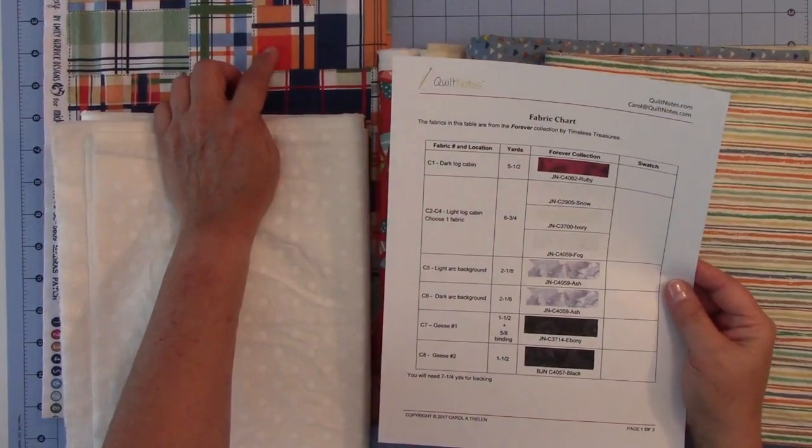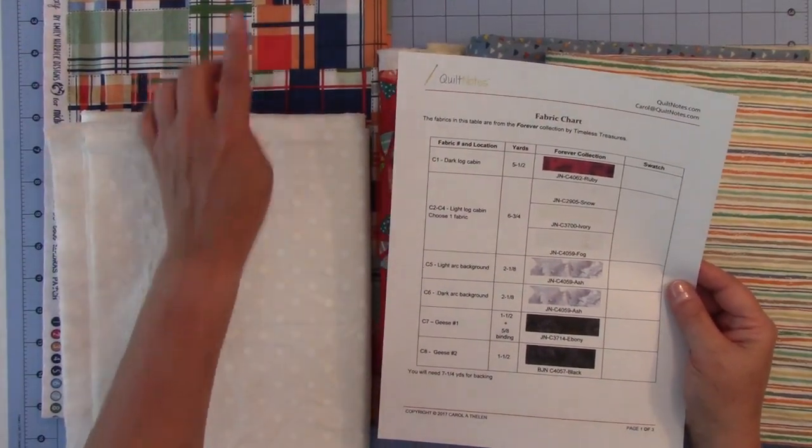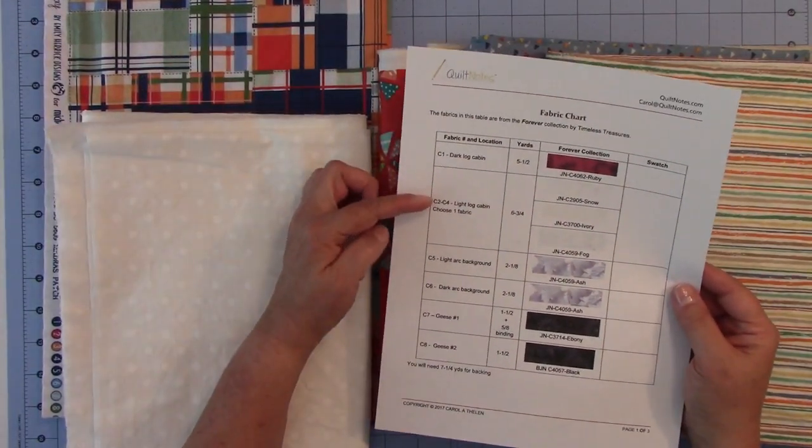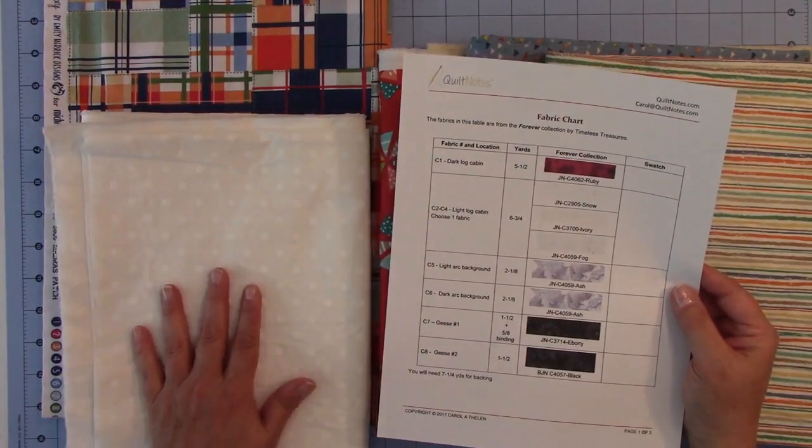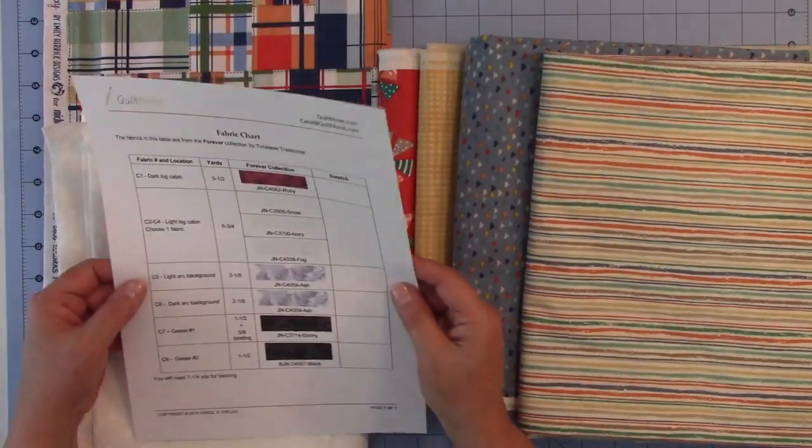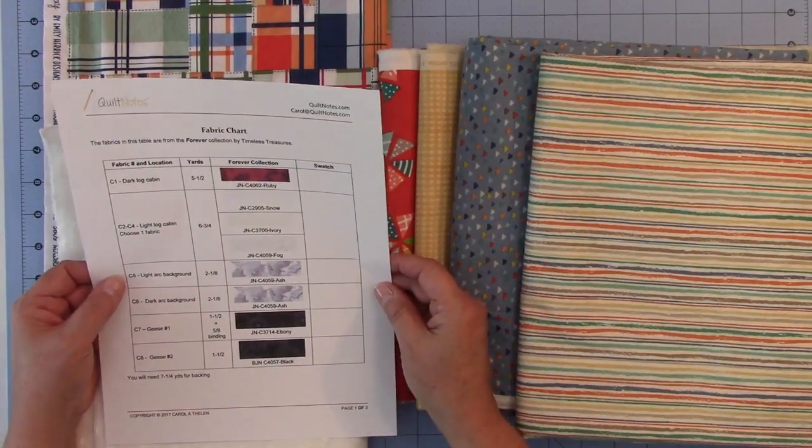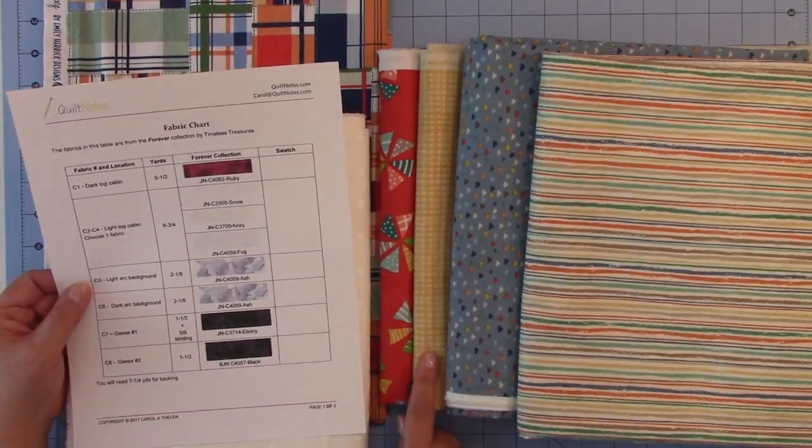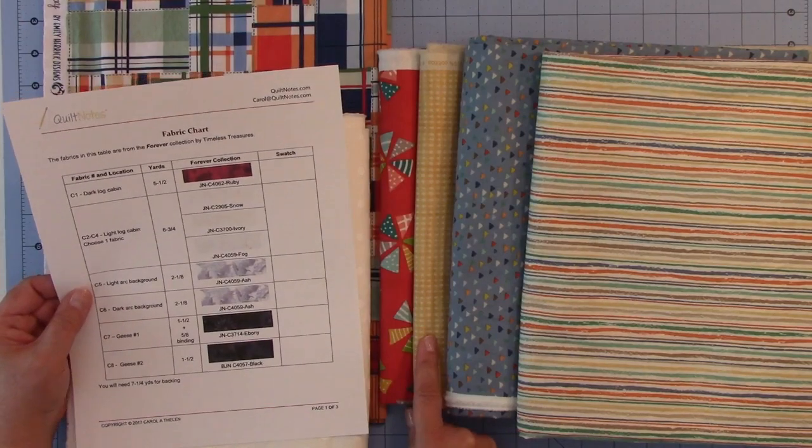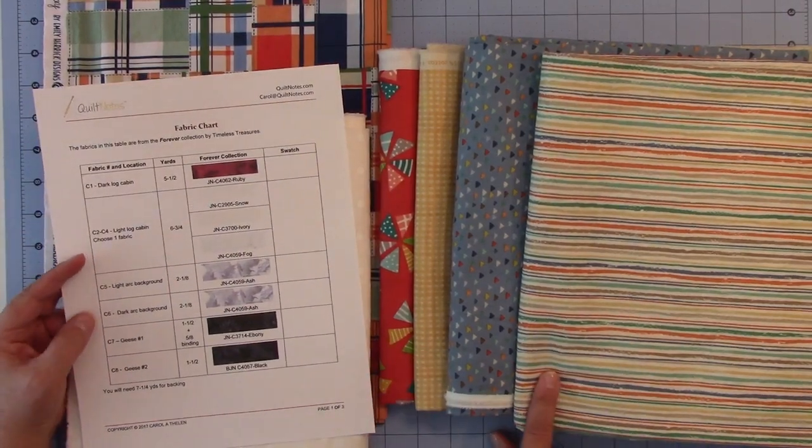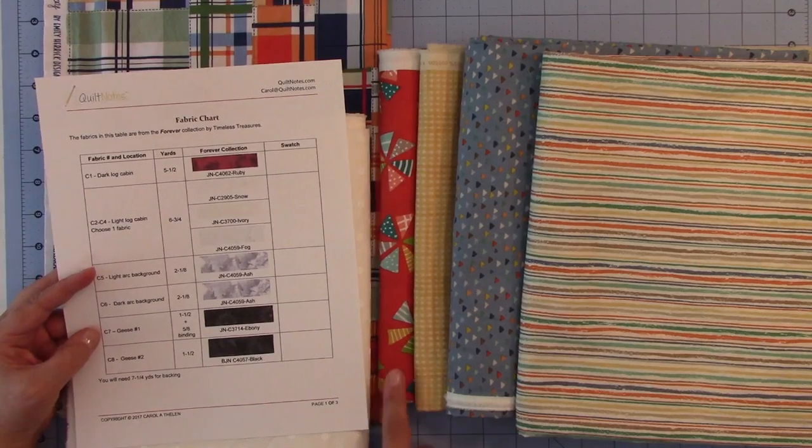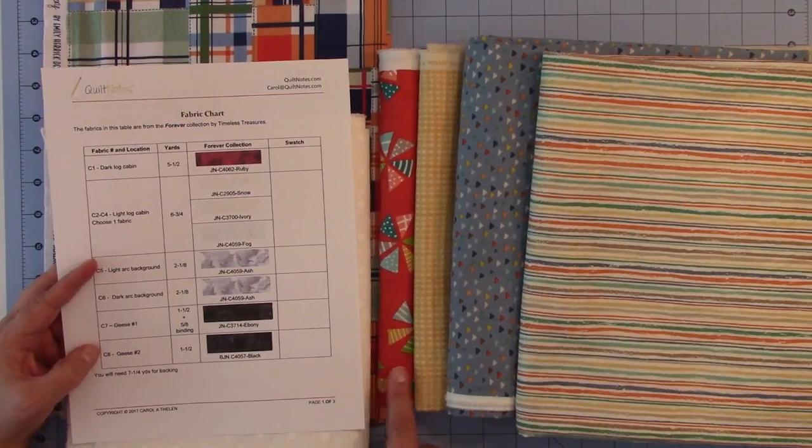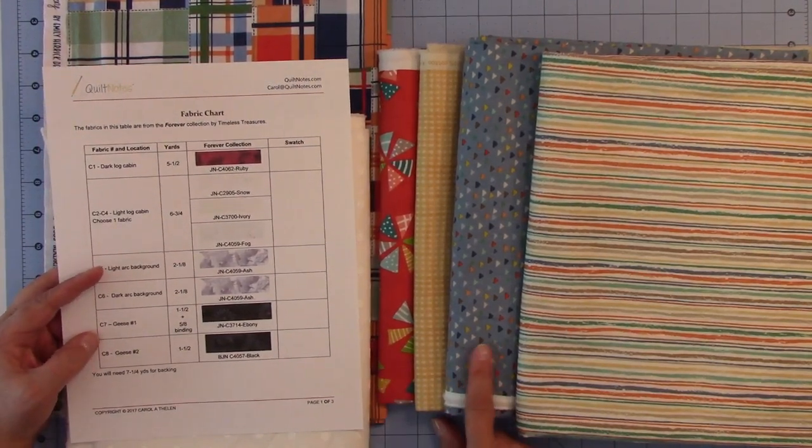So my fabric numbers: Number one is the dark log cabin, which is this, and fabrics C2 through C4 are this white fabric. The light background C5 will be this yellow, and the dark background will be C6, the stripe. Geese number one will be this tangerine color, and geese number two will be this blue multicolor here.